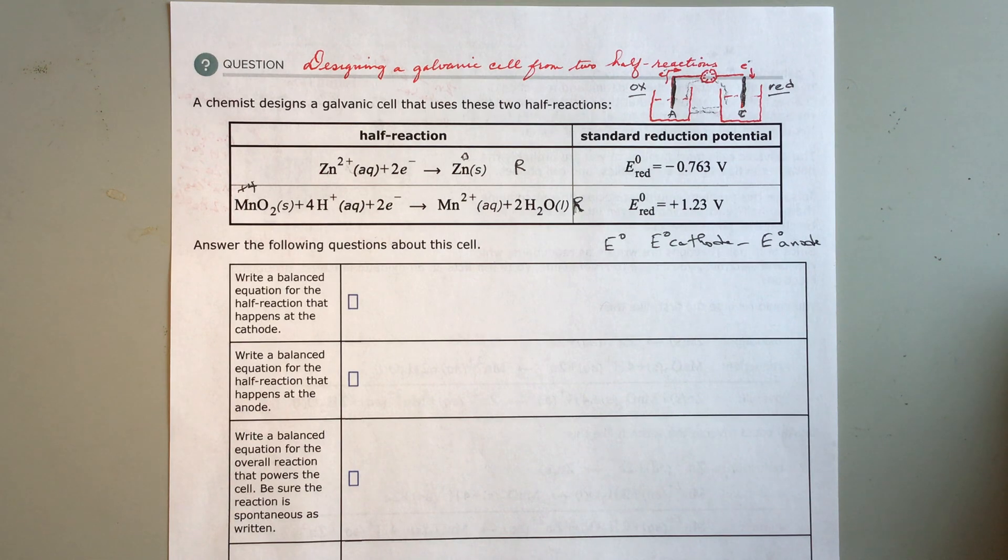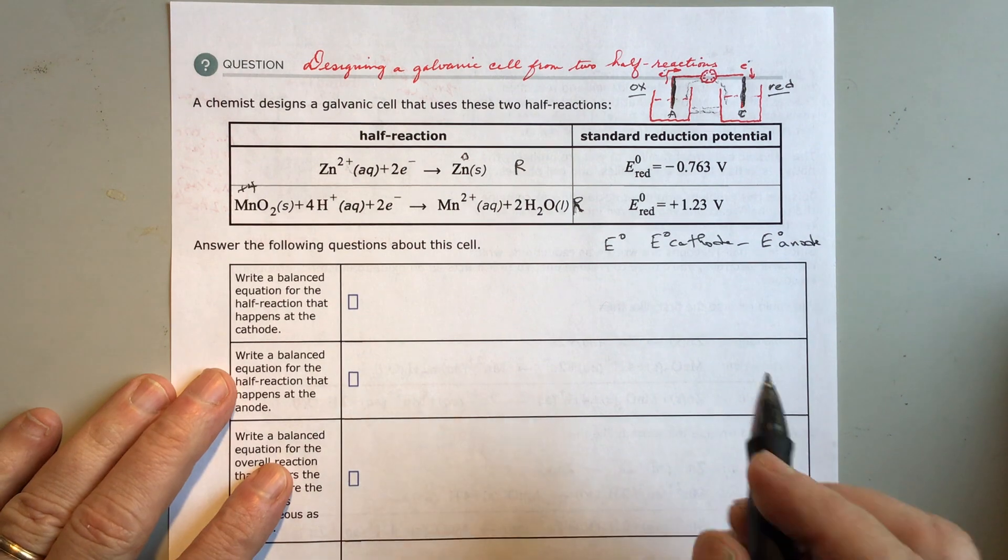Welcome back. This is an Alex training video on designing a galvanic cell from two half reactions. A galvanic cell is a battery and I've got a simple battery drawn here at the top.